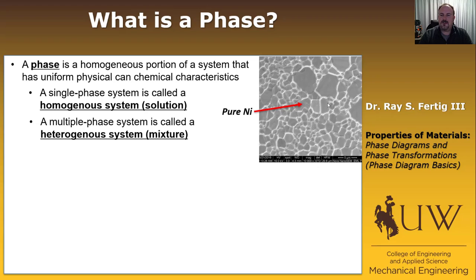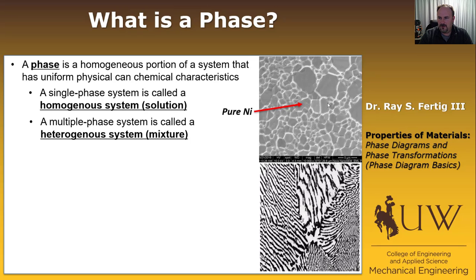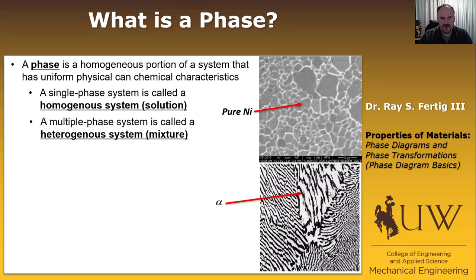In contrast, a multiple-phase system is called a heterogeneous system — sometimes called a mixture. What I'm showing below is an example of a heterogeneous system. In this case, it's a lead-tin system, which is typical of solder, and it's comprised of two phases. We call the dark phase the alpha phase and the lighter phase the beta phase.